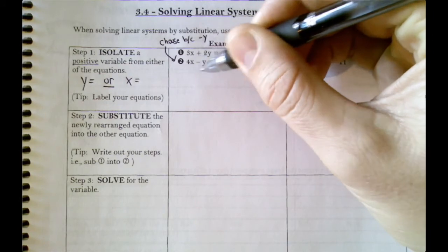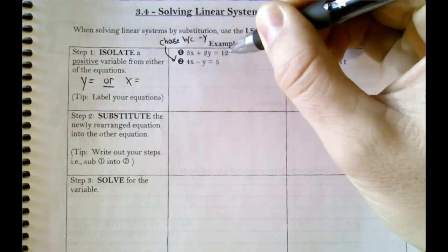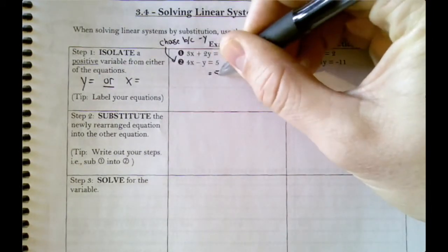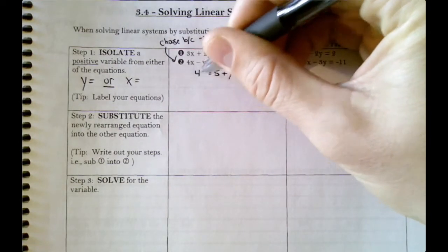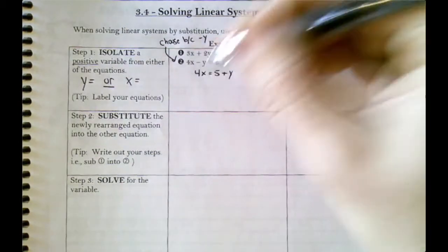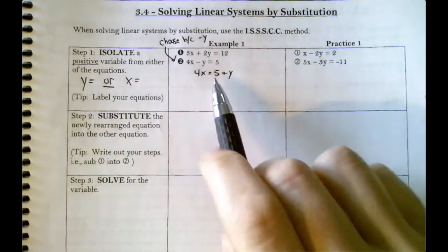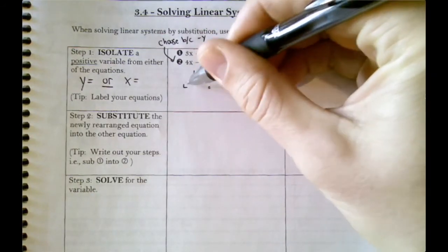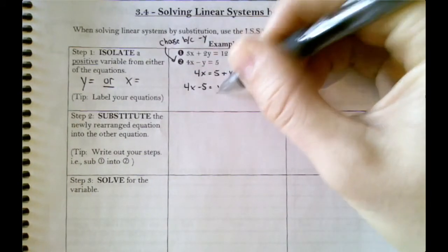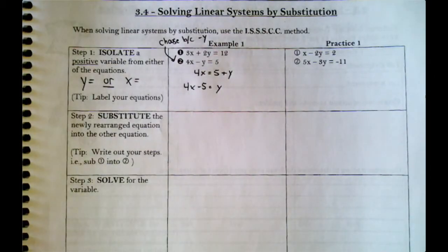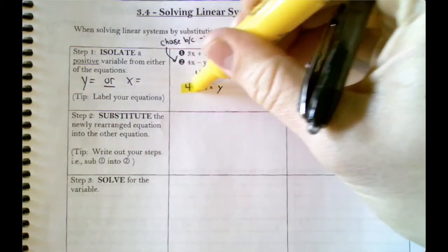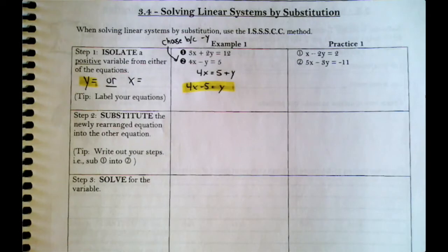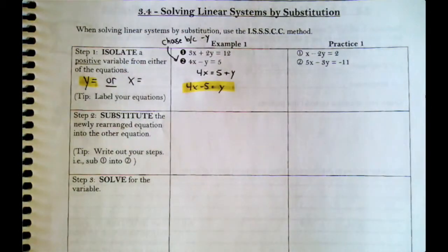We're only working with equation 2. We want positive y, so since we have a negative y, we start by moving the negative y to the other side to get positive y. Then we move the 5 to the other side and make it negative. Now we've got y equals 4x minus 5 — I'll highlight that in yellow. That's the isolate step. You only have to pick one equation, and it can say x or y equals.